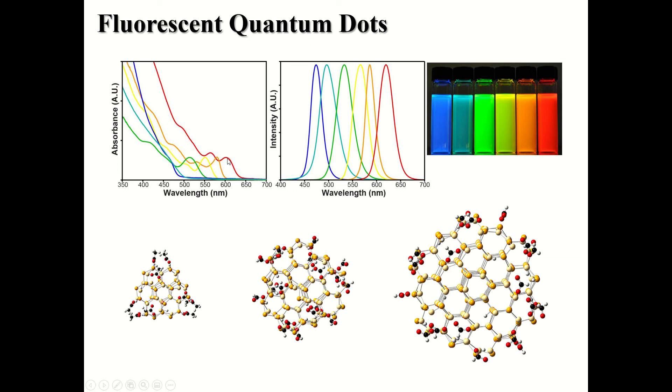So the large dot has lower energy absorptions, and that's all mirrored in the emissions, where again, the small dot is a blue high energy photon emitter and the large dot emits red. And here in this photograph, this has not been doctored up in any way. This is what these materials really look like.